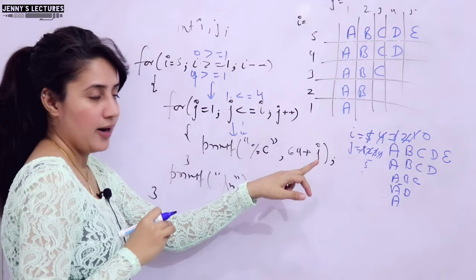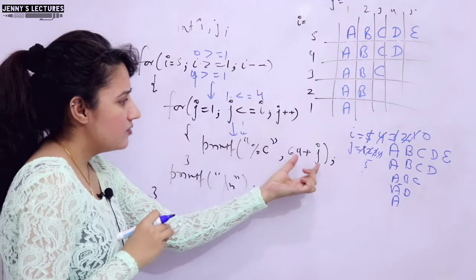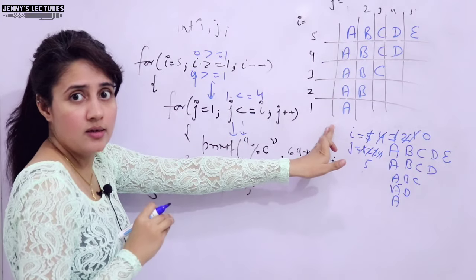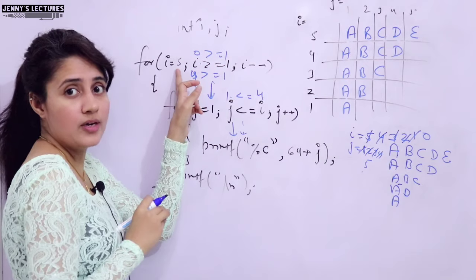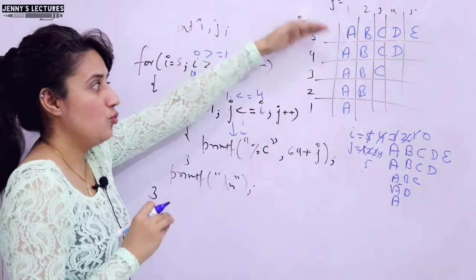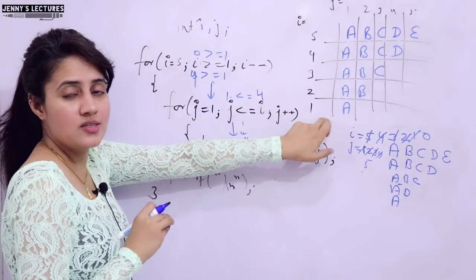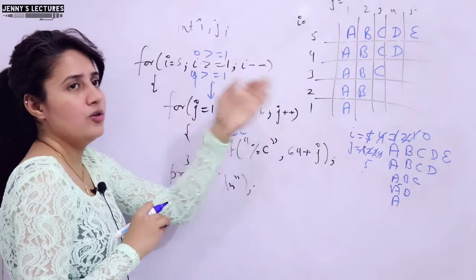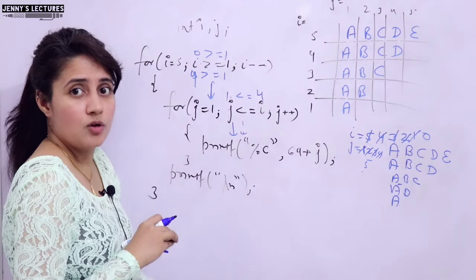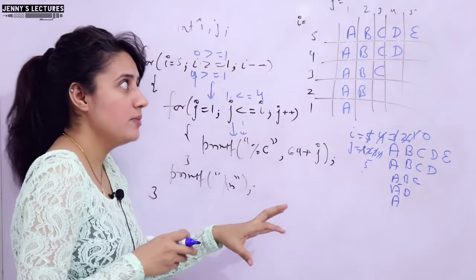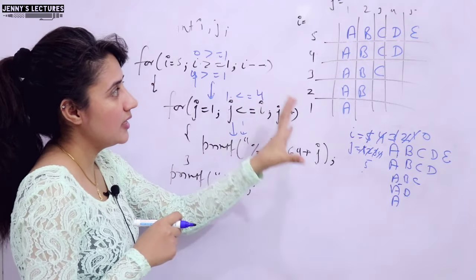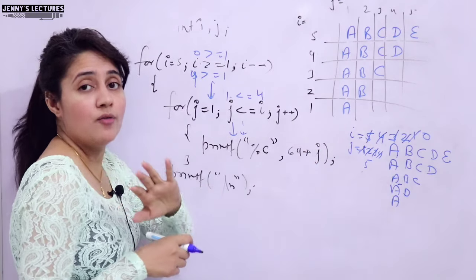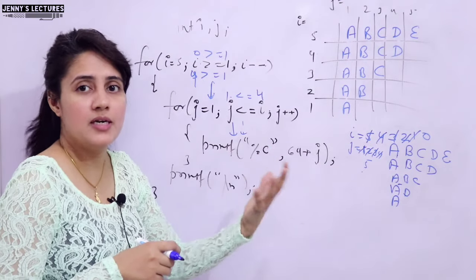So for a reverse type pattern, you just have to reverse the outer loop — run it from 5 to 1, meaning the maximum number of lines down to 1, with i minus minus. For a simple ascending pattern like A, AB, ABC, you run the outer loop from 1 to 5. Once you practice 10 to 20 printing pattern programs, you will automatically recognize the loop condition as soon as you see the pattern. But you must practice.